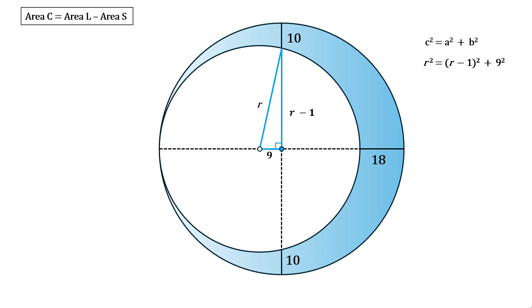So we have r squared equals the square of r minus 1 plus 9 squared. This simplifies to r squared equals r squared minus 2r plus 1 plus 81. Subtract r squared from both sides and add 2r to both sides, leaving 2r equals 82. Divide by 2, so we are left with the radius of the smaller circle which is equal to 41.